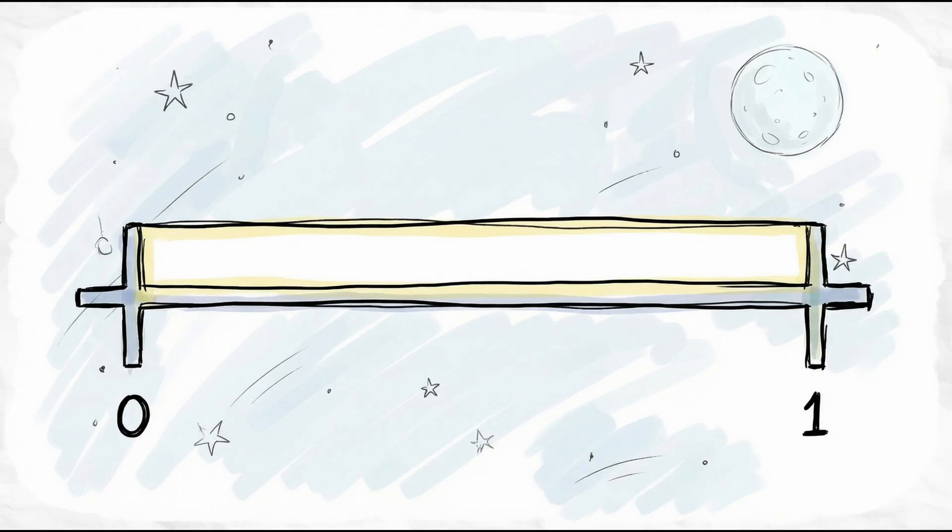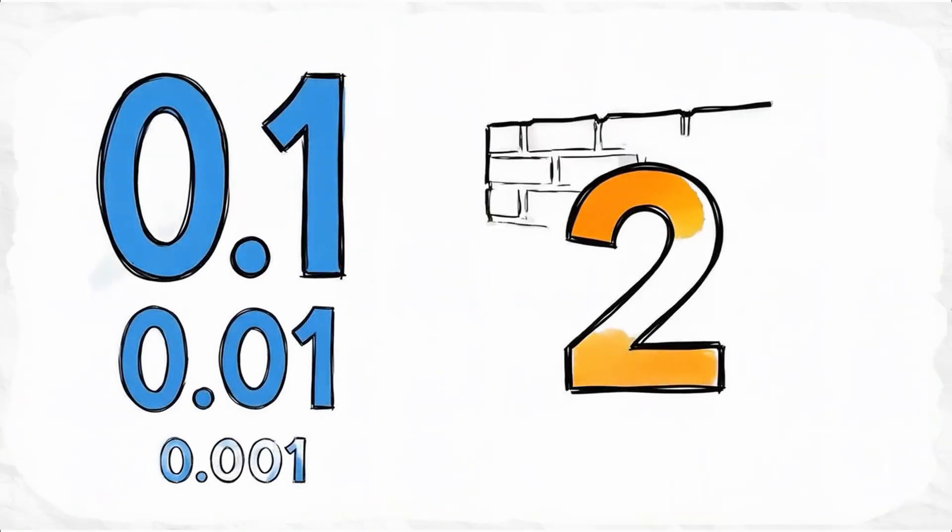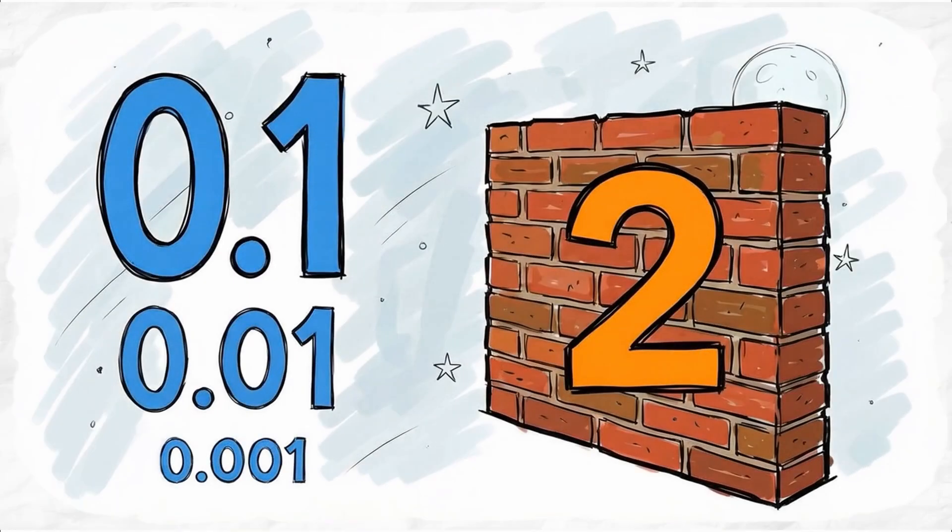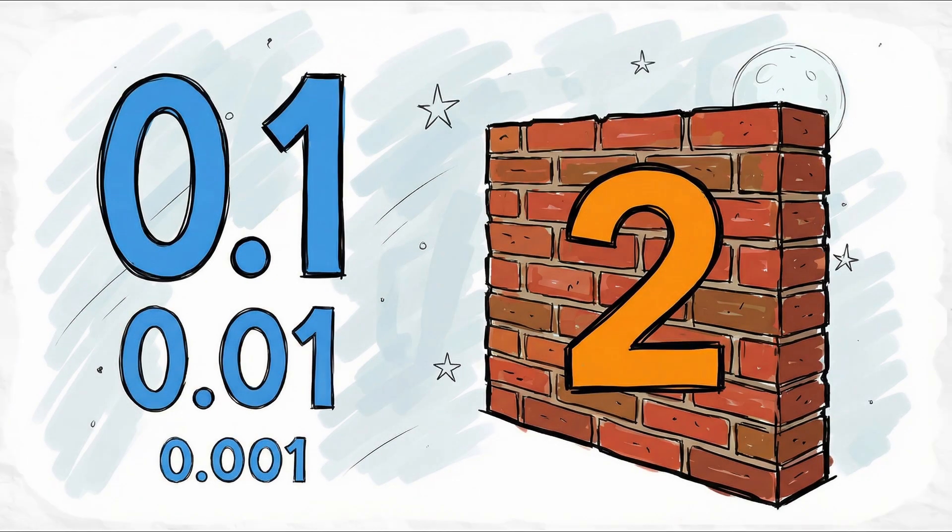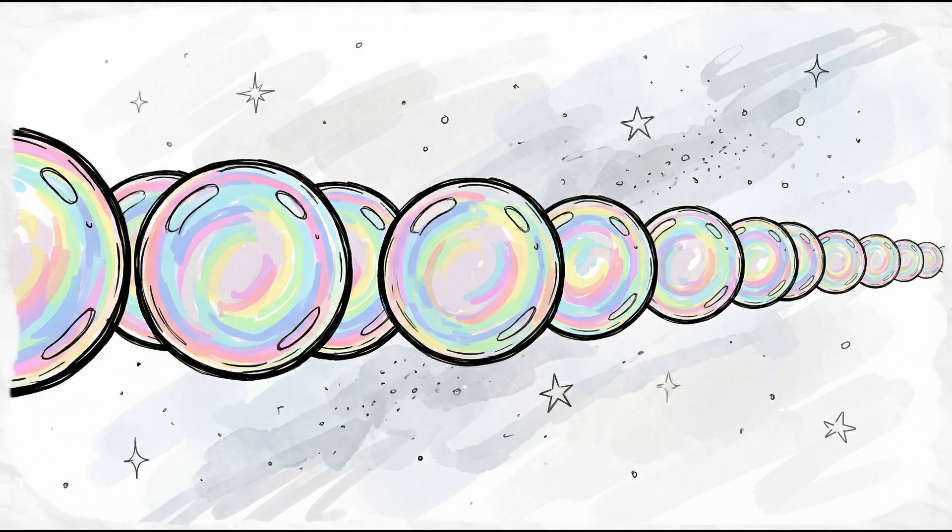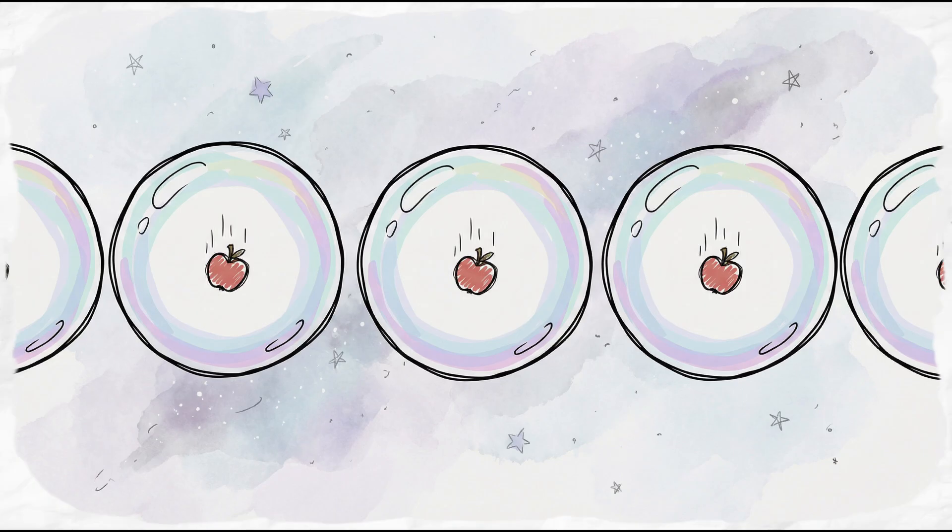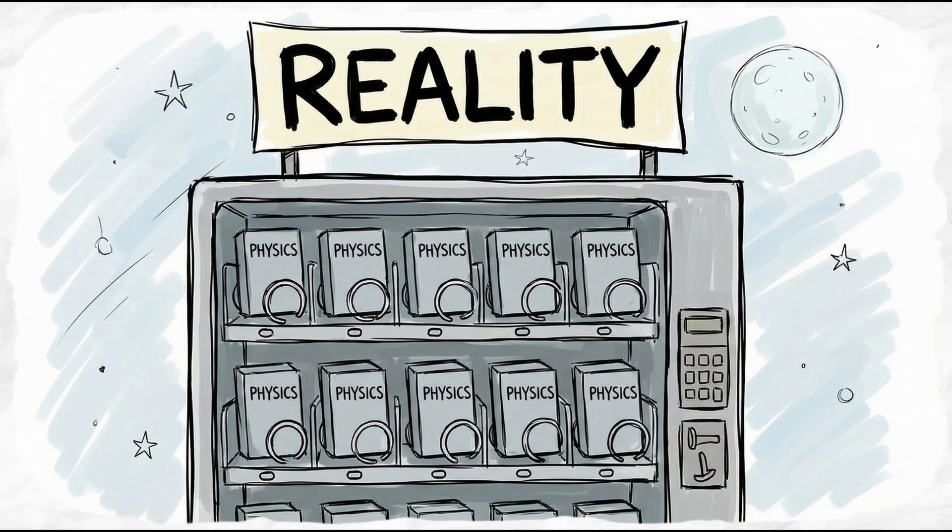Look, there are infinite numbers between 0 and 1. 0.1. 0.01. 0.001. You can count forever and never get to 2. Same deal here. You can have infinite universes, and they might all follow the exact same rules. Reality isn't a vending machine that gives you whatever you imagine.